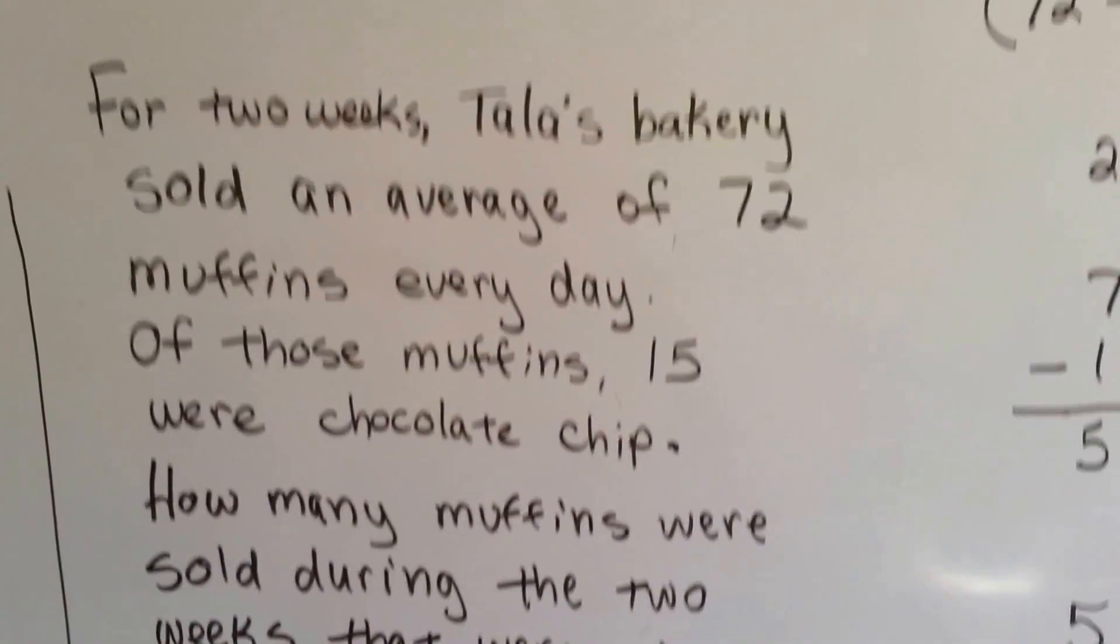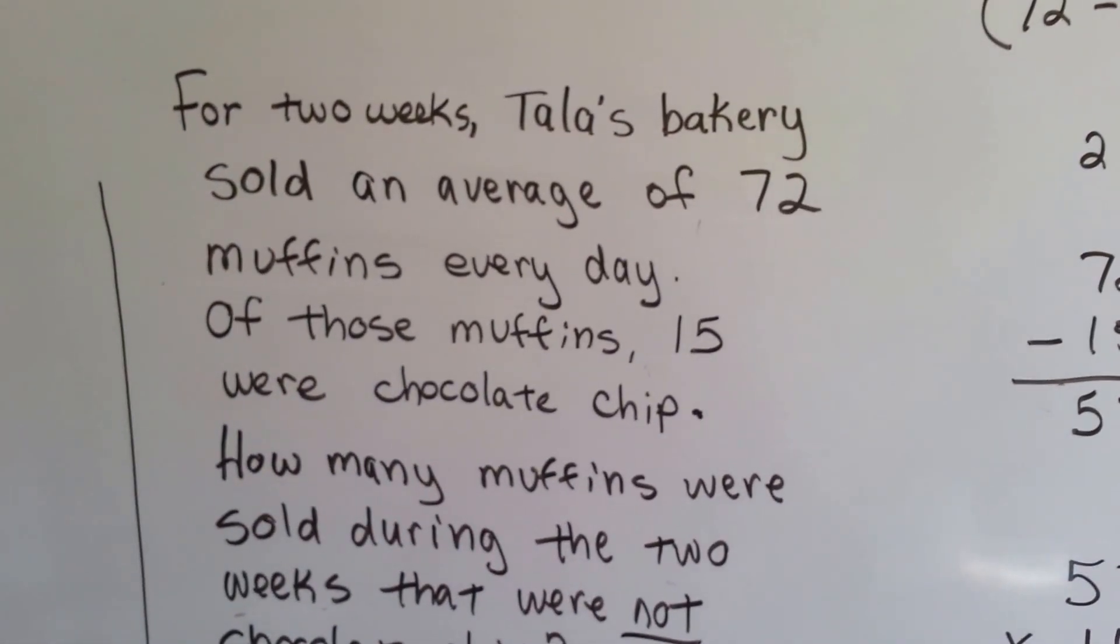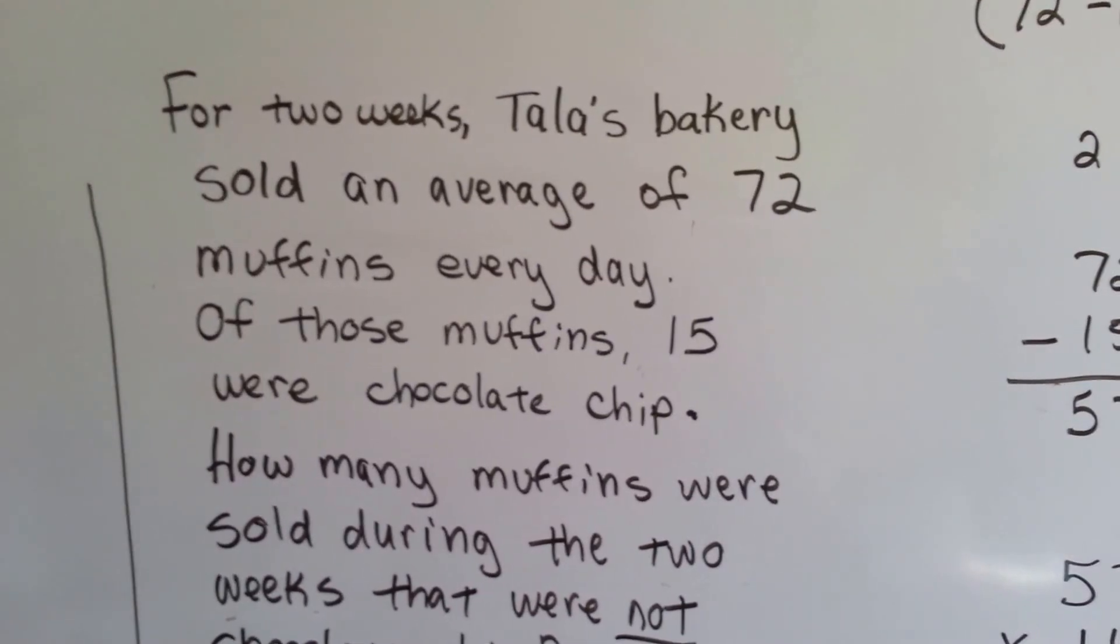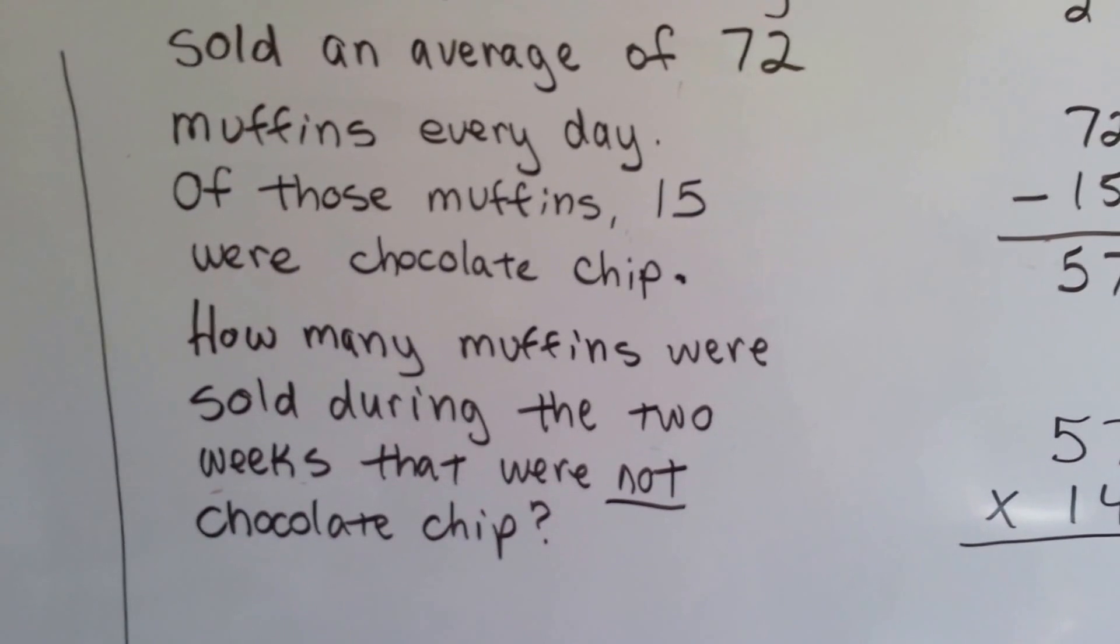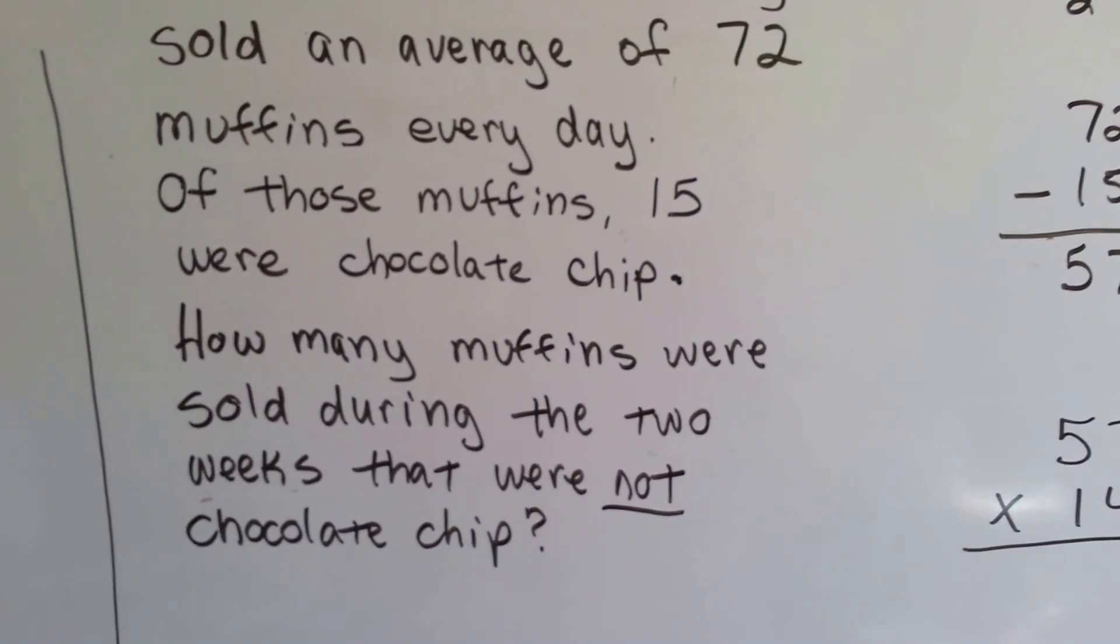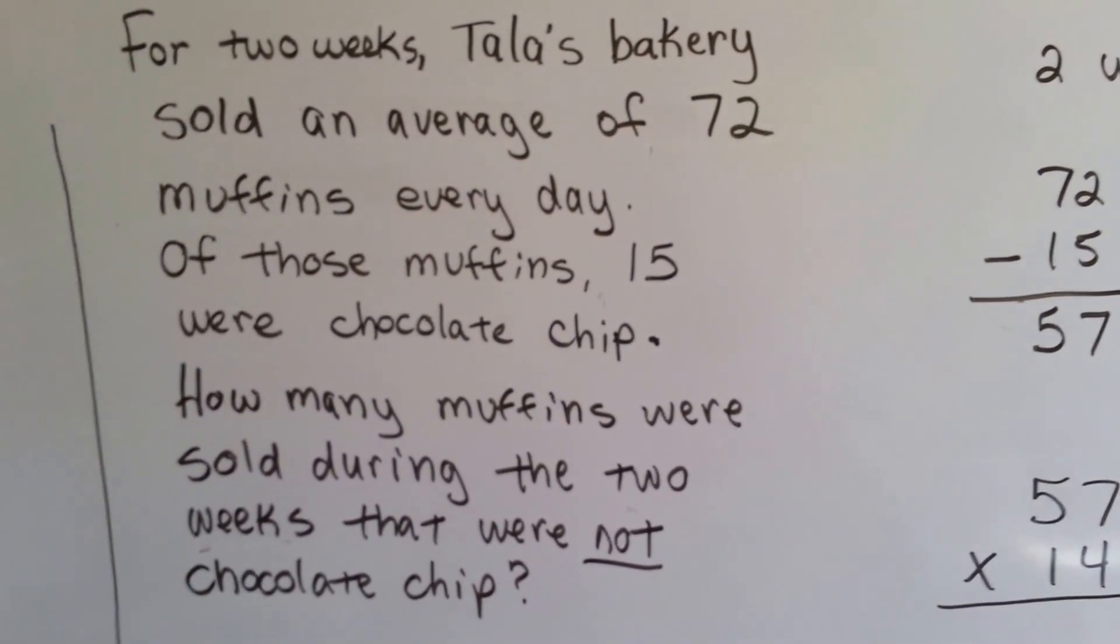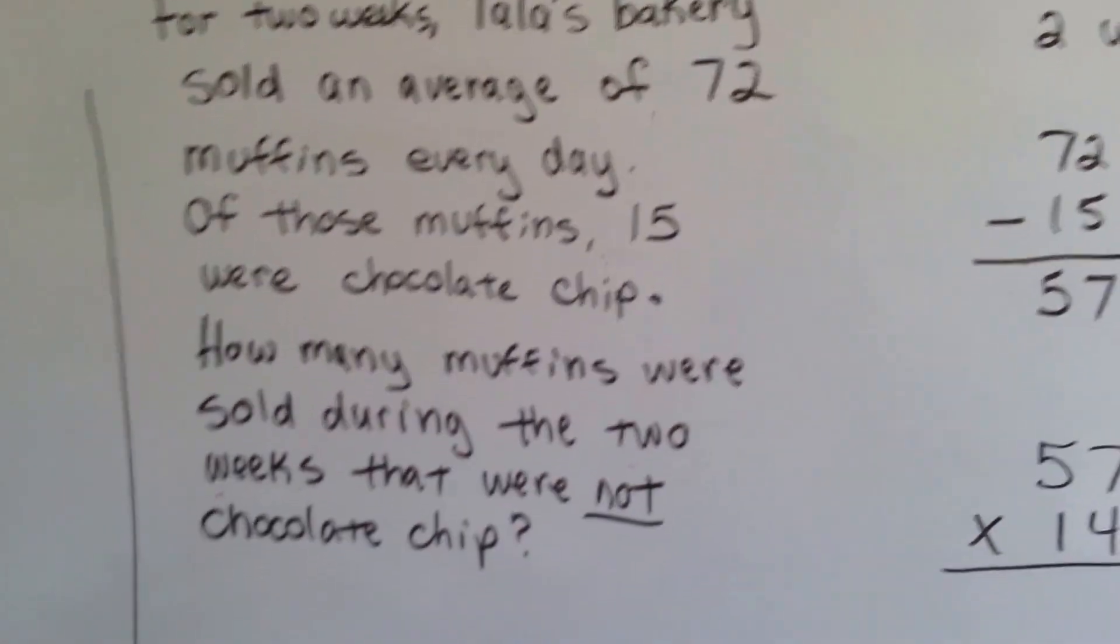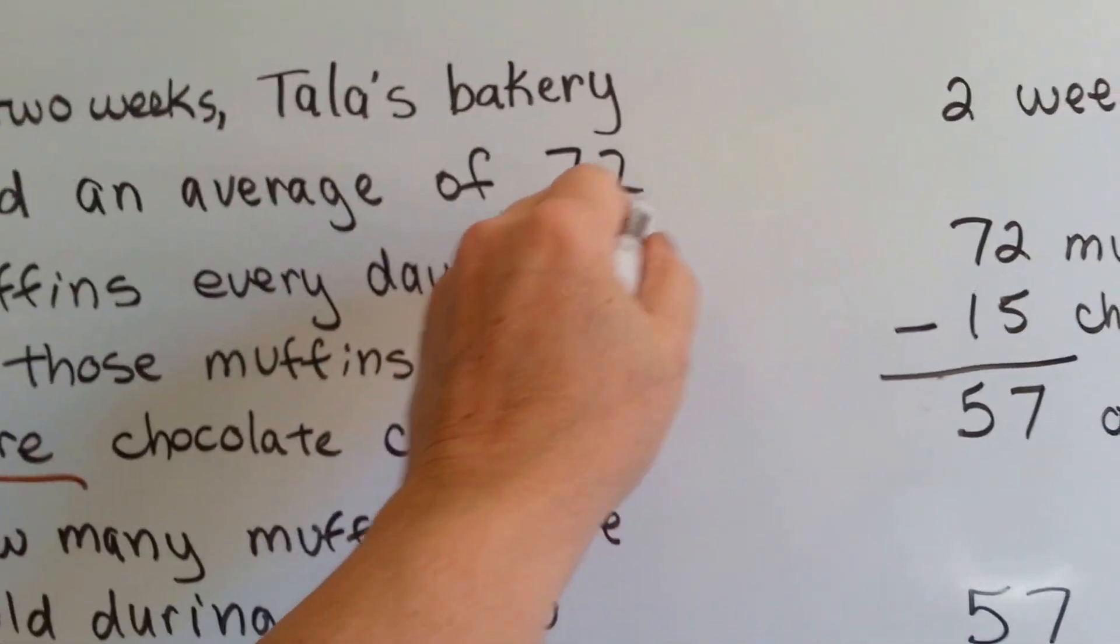For two weeks, Tala's Bakery sold an average of 72 muffins every day. Of those muffins, 15 were chocolate chip. How many muffins were sold during the two weeks that were not chocolate chip? So we need to find out how many were not chocolate chip. Well, we know 15 were. And we know she sold 72.